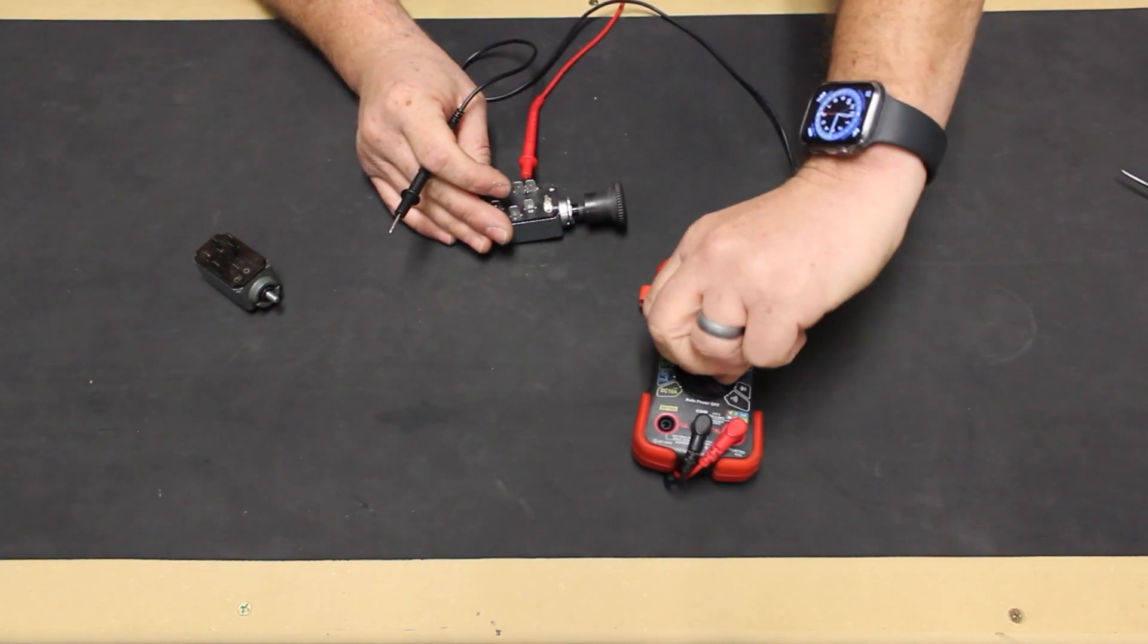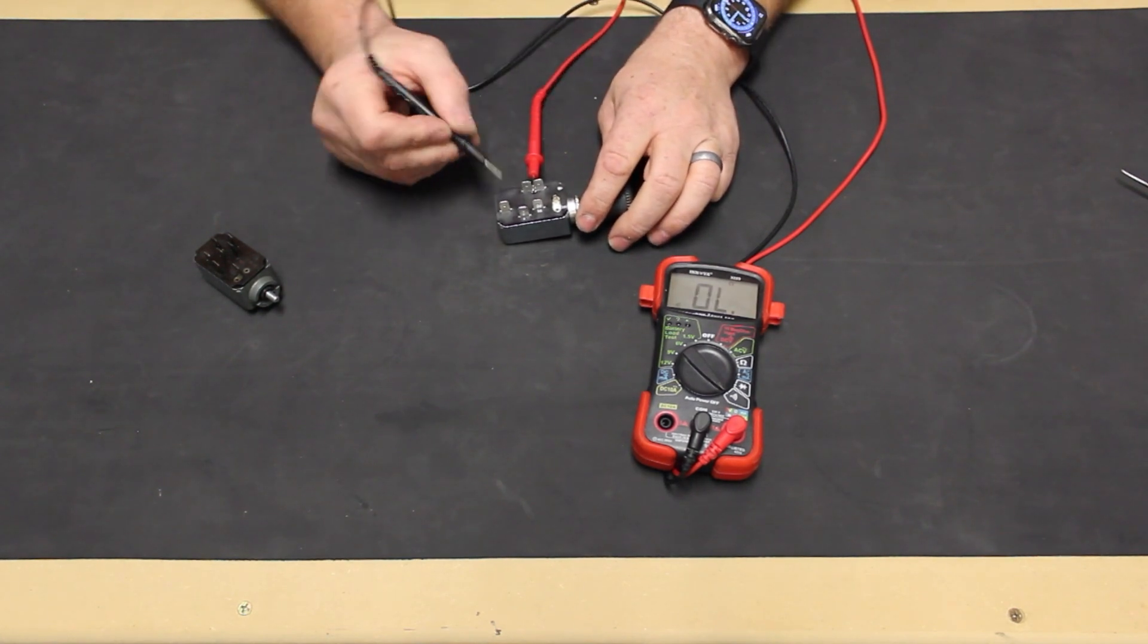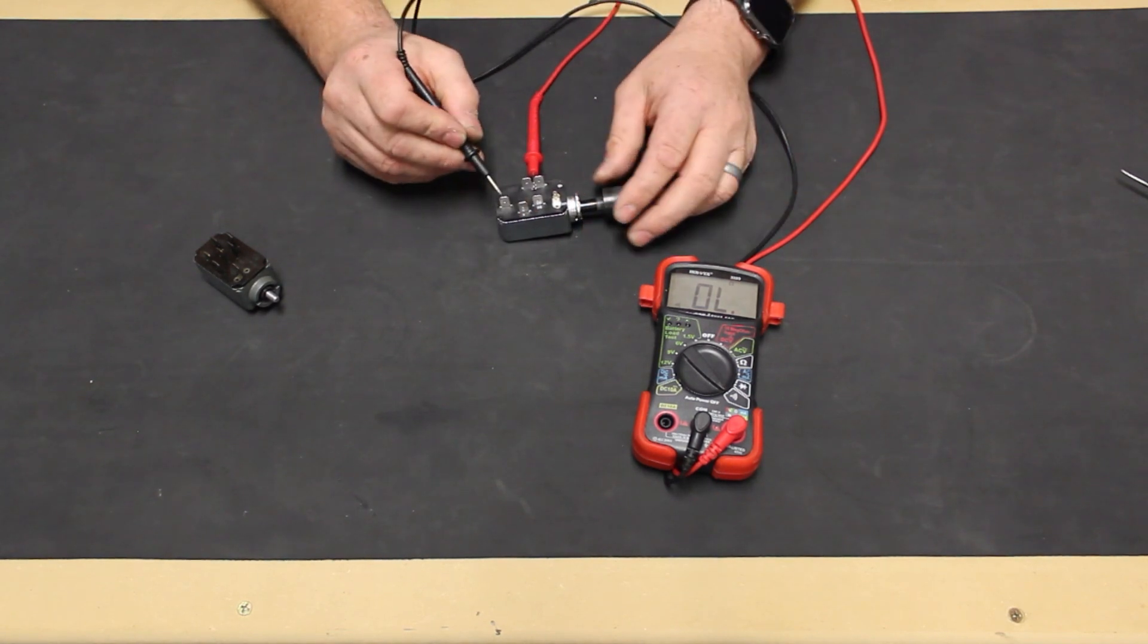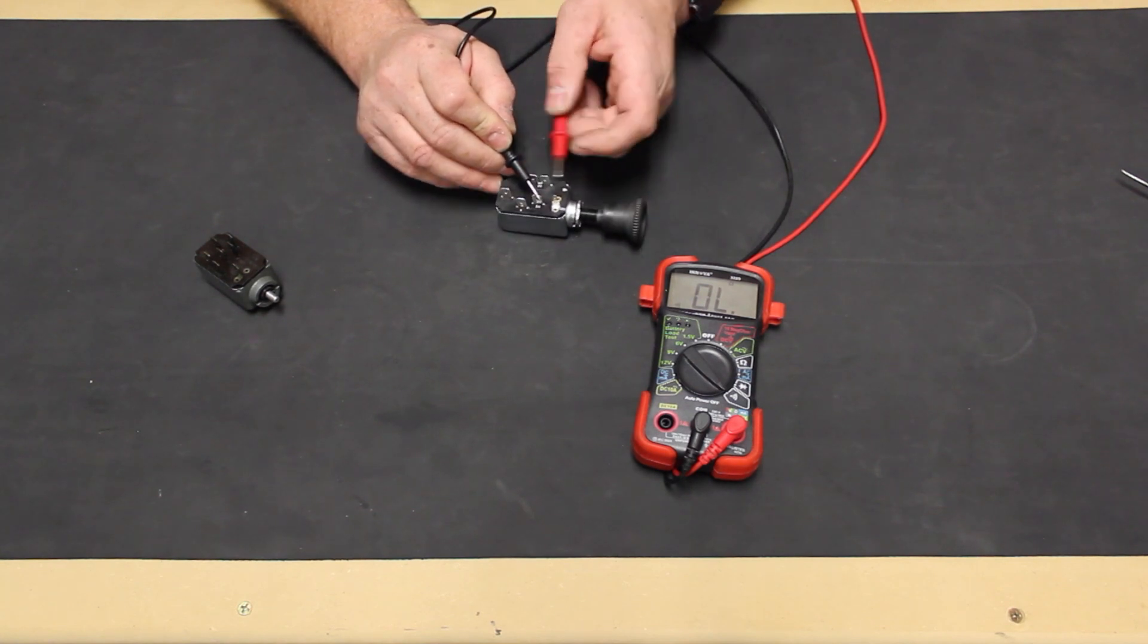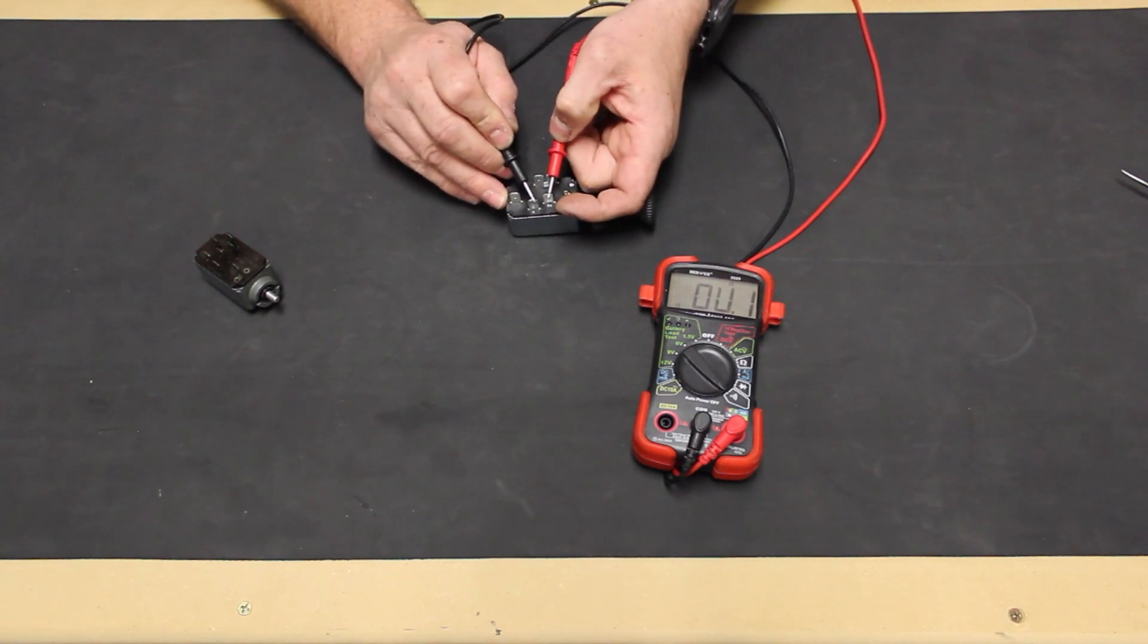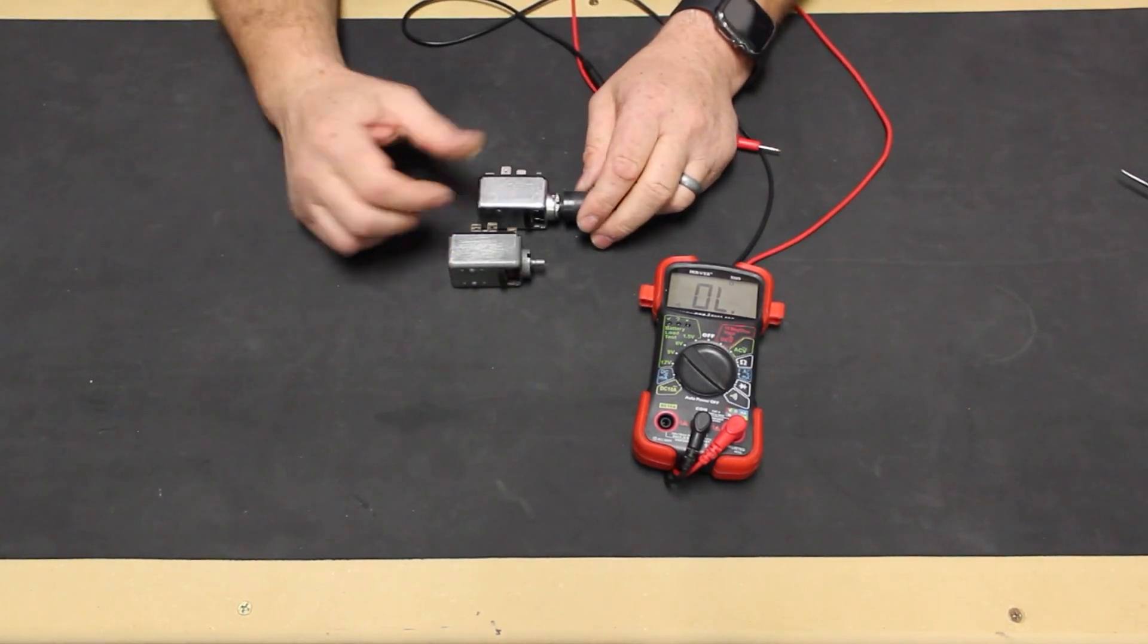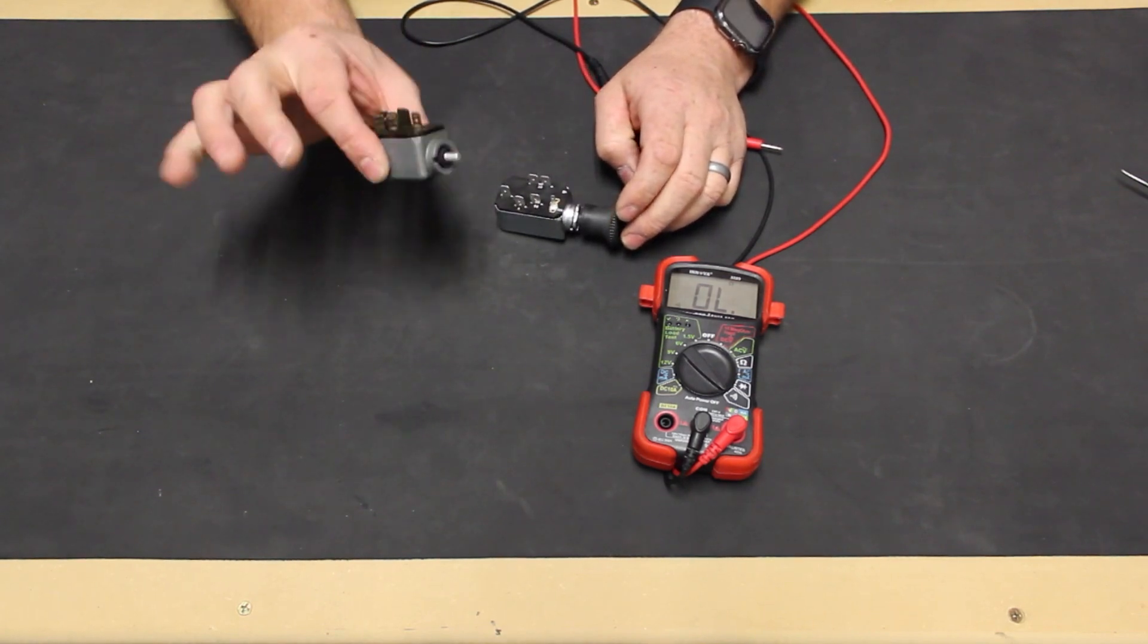We turn our meter back on to audible, and check our 58 and 58B terminals again at the first position. Then, we pull out the knob to the second position, and they both have power as they should. The 56 terminal again doesn't have power until we have power at the X terminal. And when we do, our headlight switch works correctly, so we can toss out our old switch.